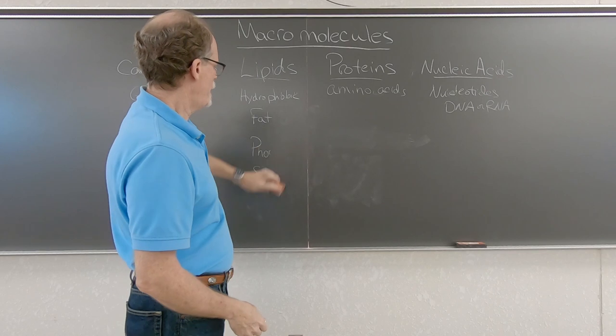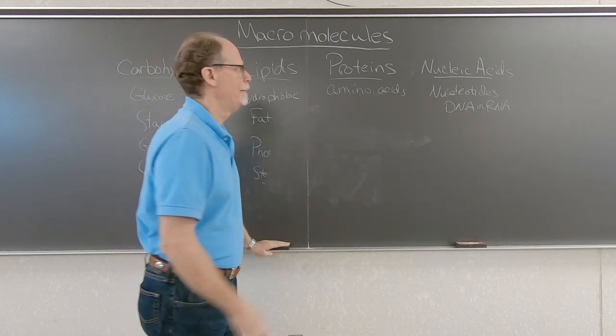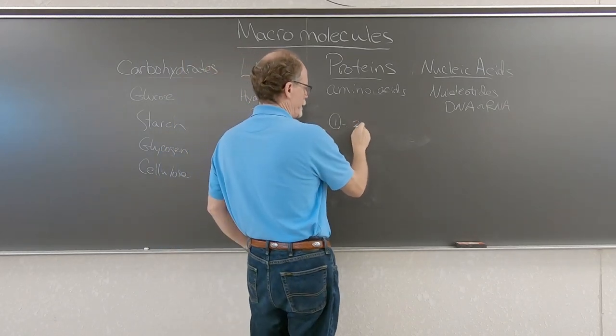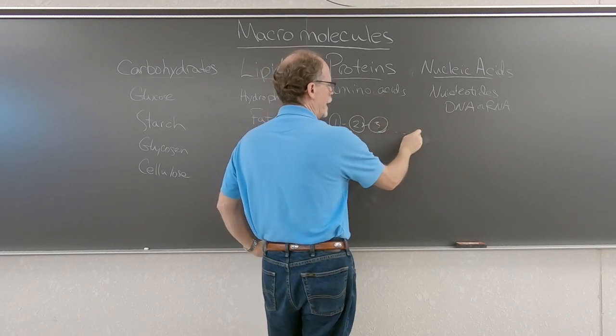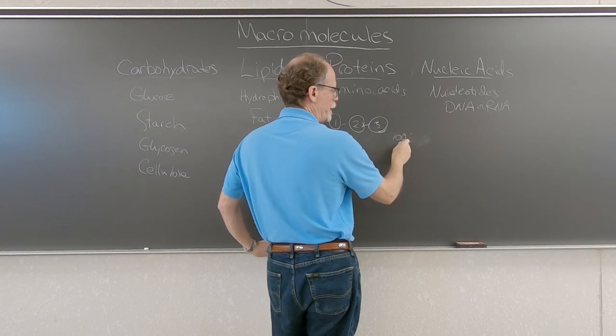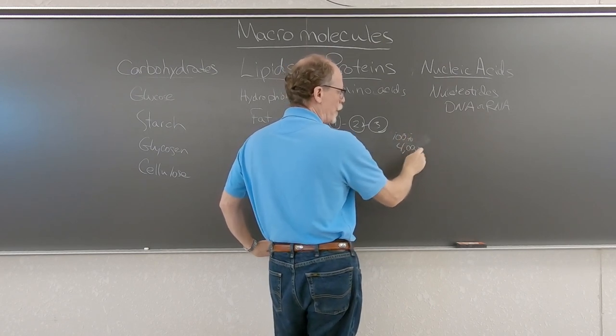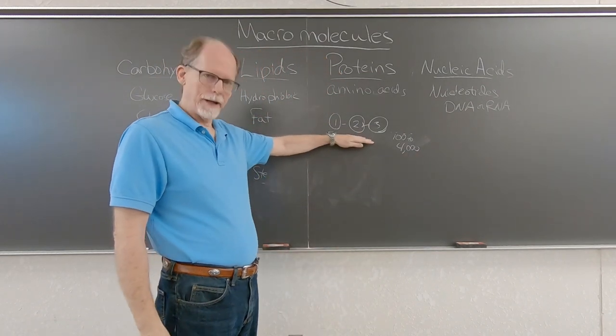All right, now, amino acids make proteins, so you have, let's say, amino acid number one linked to amino acid number two linked to amino acid number three. Now, there can be, in a protein, 100 to even 4,000 or so or more amino acids all linked together.